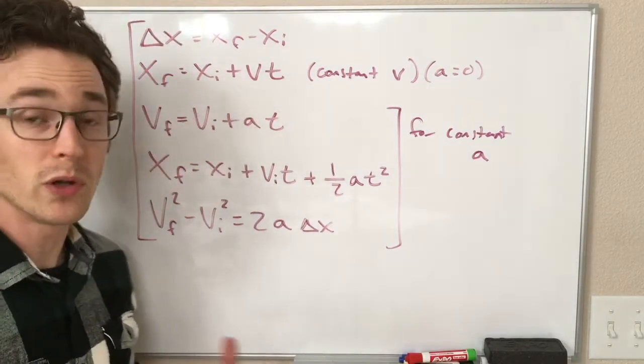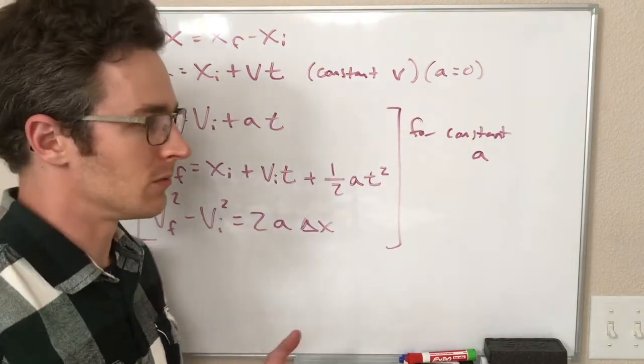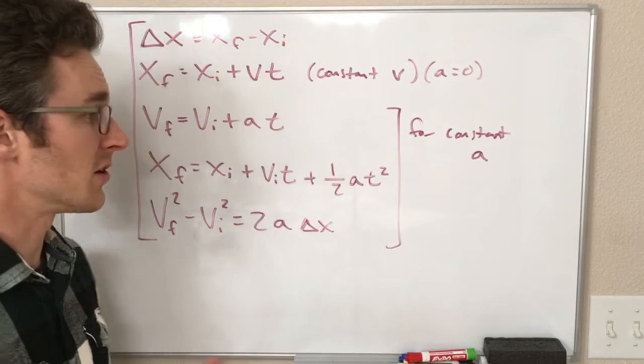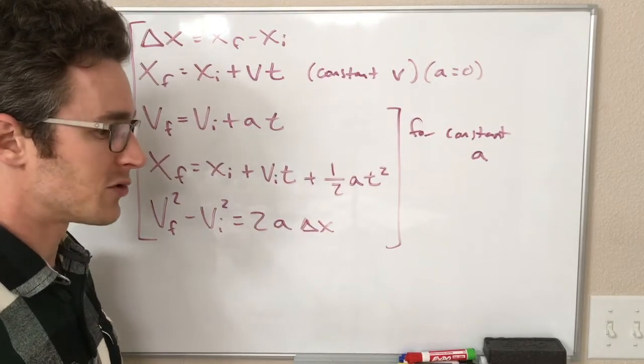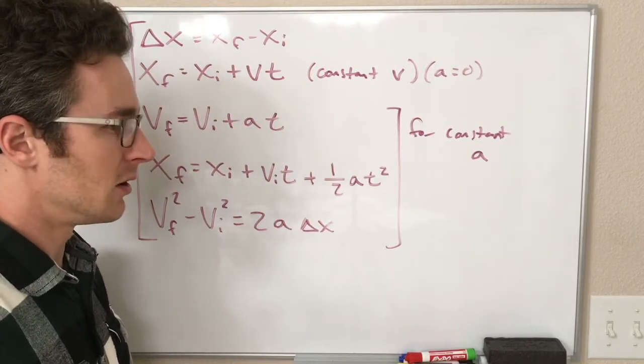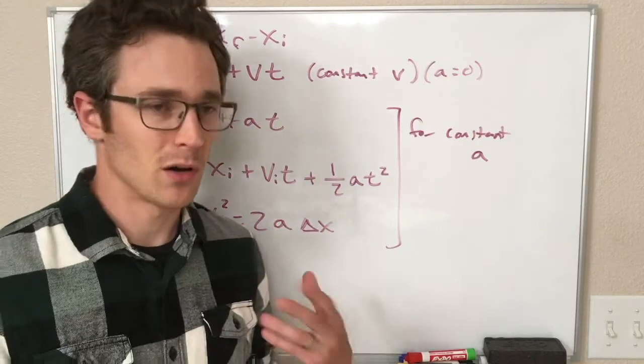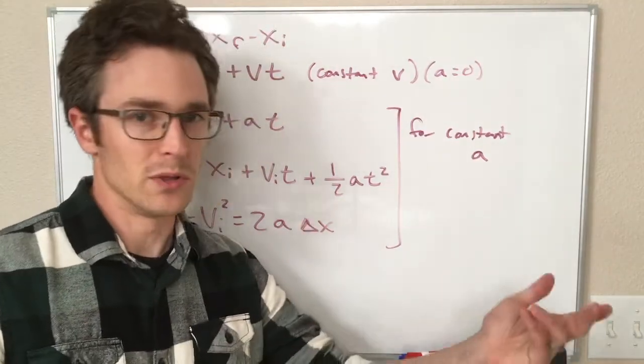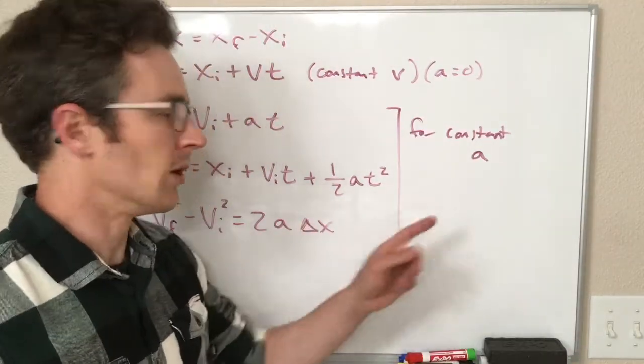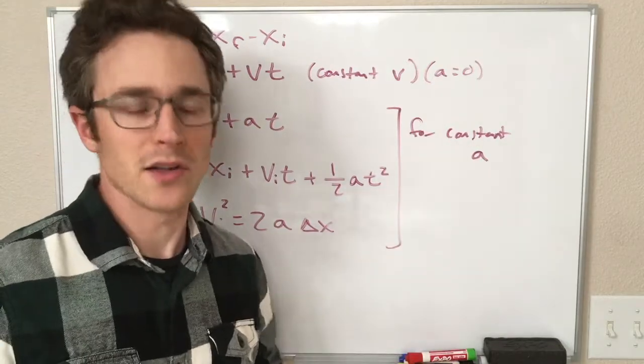When we will encounter problems, we'll encounter situations where our acceleration is changing, and we have to pay attention to that. But if we're told, oh, the acceleration of the car is 1.2 meters per second squared or whatever, implicitly we're saying that is constant acceleration.